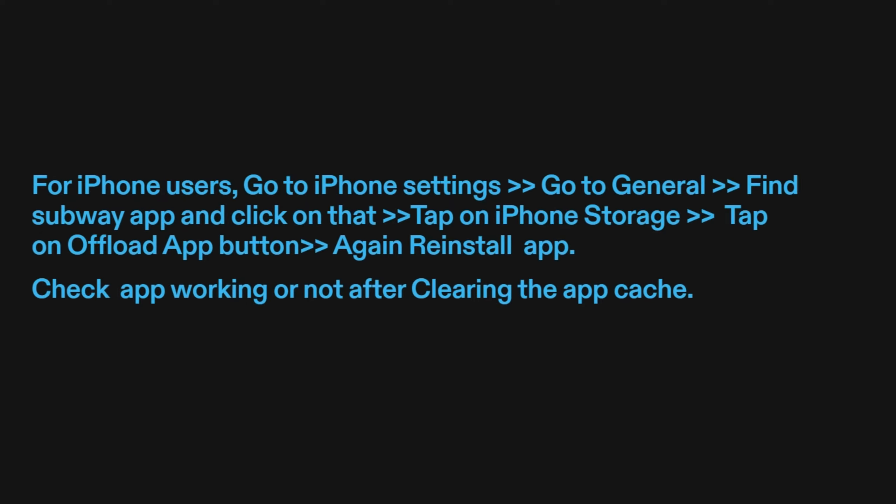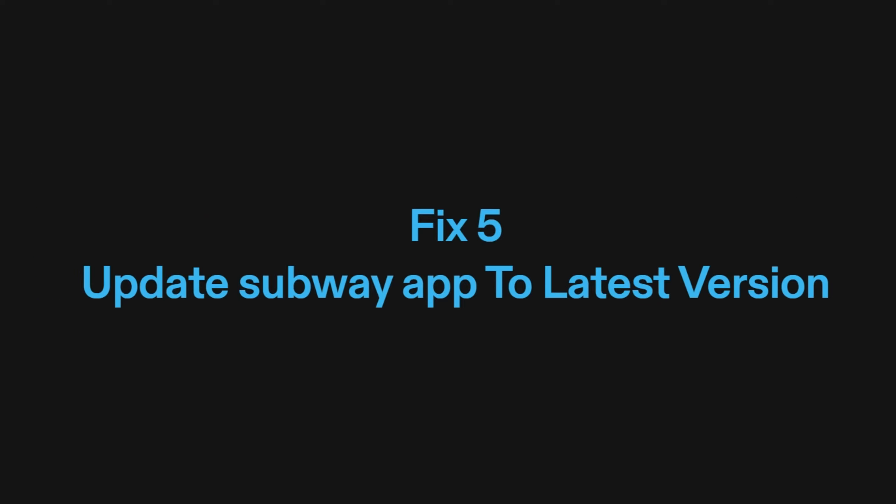For iPhone users, go to iPhone Settings, go to General, find the Subway app, and click on it. Tap on iPhone Storage, then tap on the Offload App button. Again, reinstall the app. Check if the app is working after clearing the app cache.